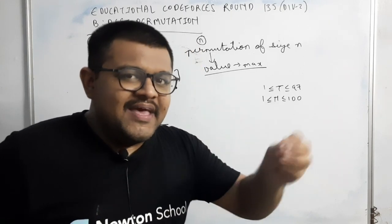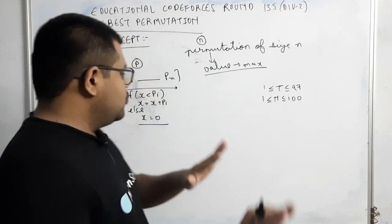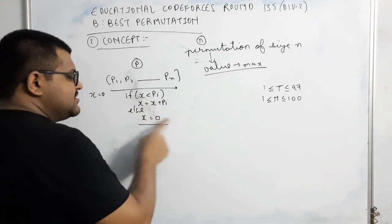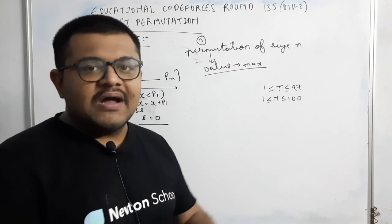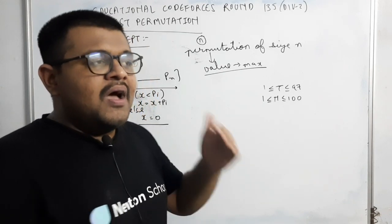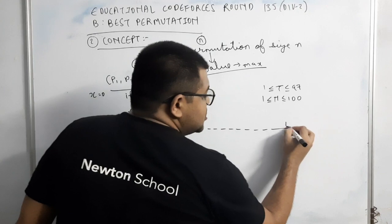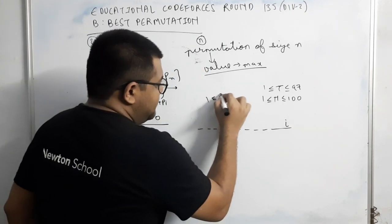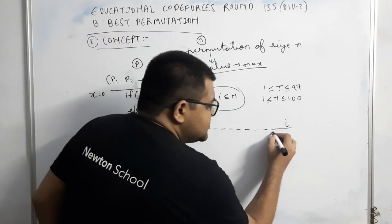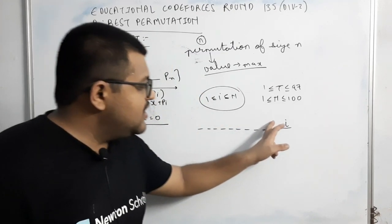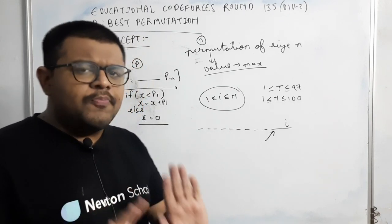तो एक बात समझो. तो हमें यह तो clearly दिख रहा है कि last element जो होगा, हमें ऐसा permutation select करेंगे कि last element x में add होगा. क्योंकि हर एक index पे दो ही चीज होगी. या तो वो element x में add होगा, या तो x की value zero होगी. Now obviously we don't want कि last position पे x की value zero होगी, तो final answer भी x का zero होगी. It means that last element पे हमें ऐसा value चाहिए जो कि हम x में add करेंगे. अब यहां से start करता है. क्योंकि सारे permutation to generate नहीं कर सकते, वो time limit exceed दे देगा. So these are my n positions. Last position पे suppose element i है, where i is between 1 and n.